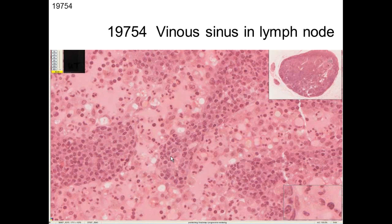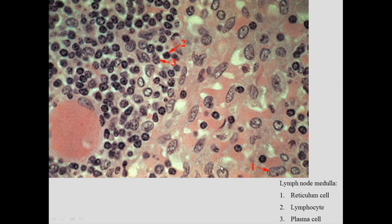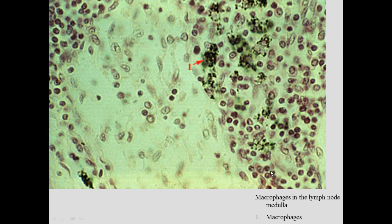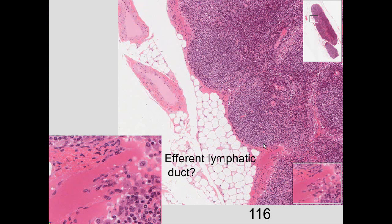In the medullary venous sinuses we can see cords and sinuses with neutrophils passing through the lymphatic sinuses, reticular cells, and macrophages in the cords. Macrophages that have taken up colloidal carbon illustrate their location — they pick up debris coming through the lymph node and present antigens to associated lymphocytes. Fluid enters from all locations but exits through one region, the efferent lymphatic duct at the hilus.